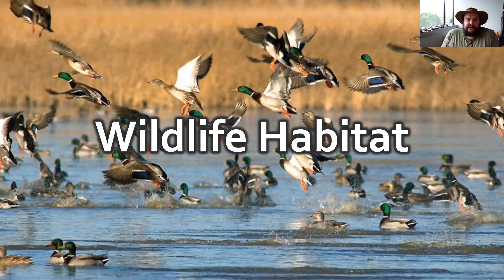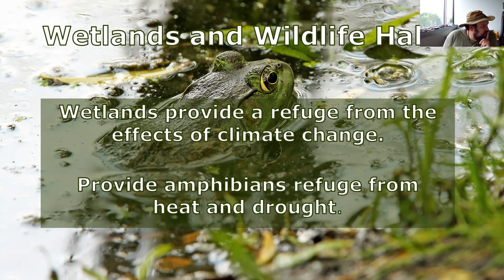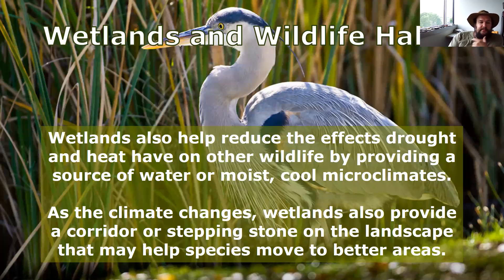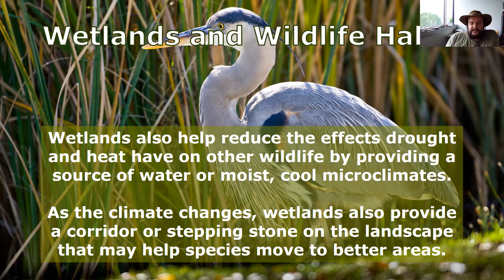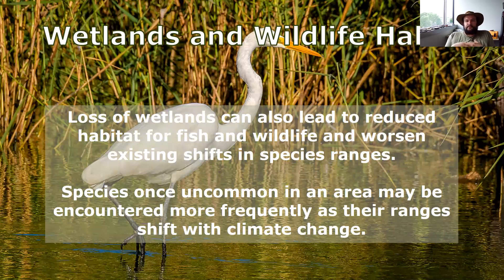Wetlands also provide critical wildlife habitat. It's estimated that a third of threatened and endangered species in the lower 48 states live only in wetlands, and an additional 20 percent use or inhabit wetlands at some point in their life cycles. Wetlands provide refuge from the effects of climate change for many species, offering amphibians refuge from heat and drought. As climate changes, wetlands provide corridors or stepping stones on the landscape that may help species move to more suitable areas.